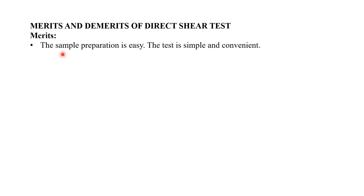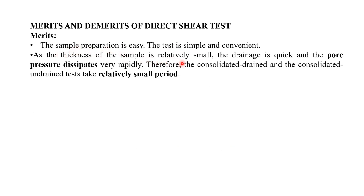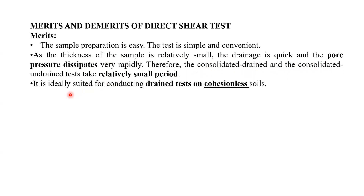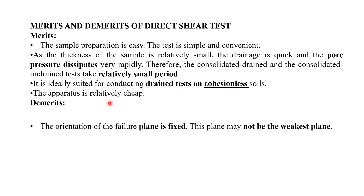Advantages of the direct shear test: sample preparation is easy; the test is simple and convenient. As the thickness of the sample is relatively small — between 20 to 25 mm — drainage is quick and pore pressure dissipates very rapidly. Therefore, consolidated drained and consolidated undrained tests take relatively a small period of time. It is ideally suited for conducting direct drain tests on cohesionless soils, and the apparatus is relatively cheap.